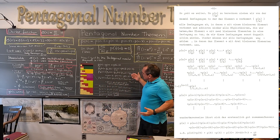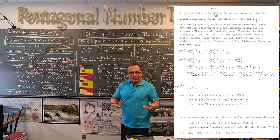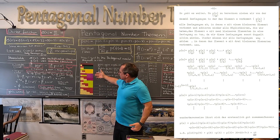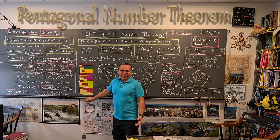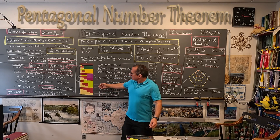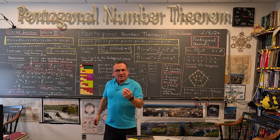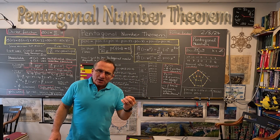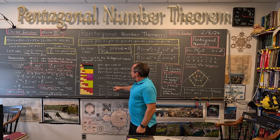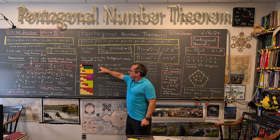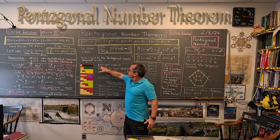What happens is you just write down the partitions — these are all the partitions of the number 8. There are 22 partitions of the number 8. Then what I was looking at is: look at all the partitions where 1 is the smallest number. I call this P with 1 underlined — that's the notation I used.